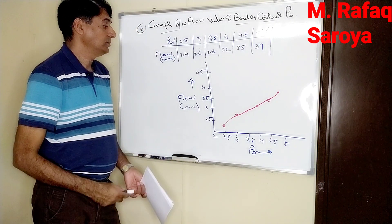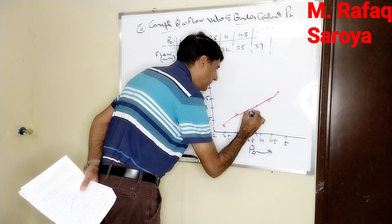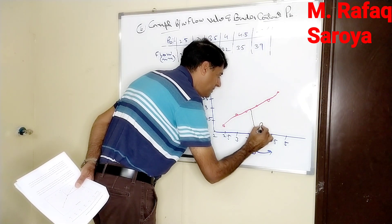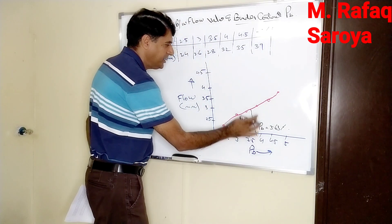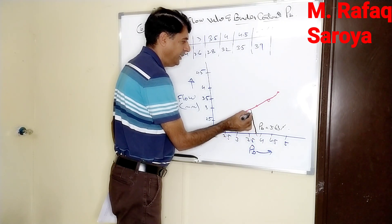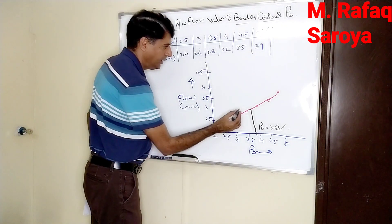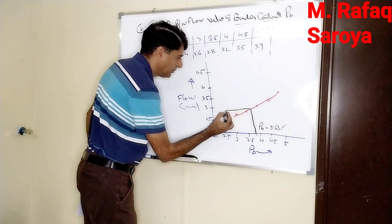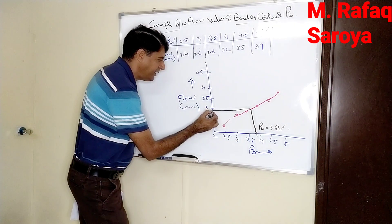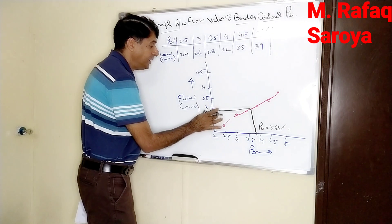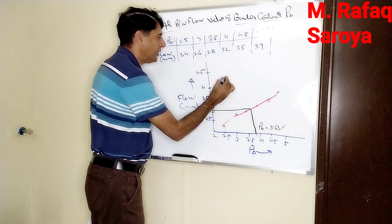After drawing this curve, we have to go to our reference point. This reference point is taken at Pb = 3.63%. I have drawn a line from this point, and it is touching the curve. Where it touches the curve, I move towards the y-axis, and it touches the y-axis at a point — this point is the flow value from this graph, and its value comes out to be 2.9 mm.